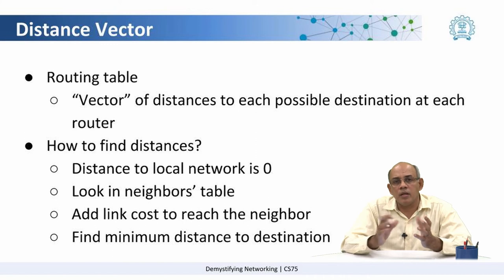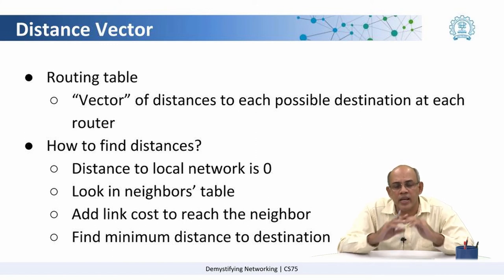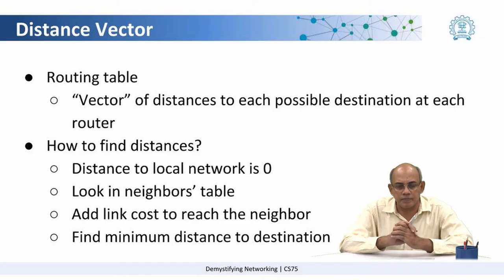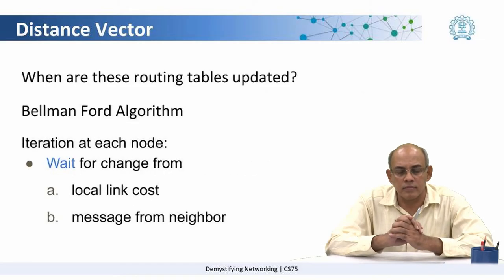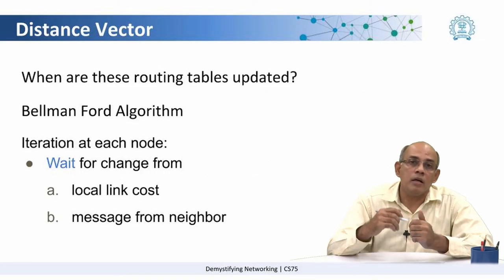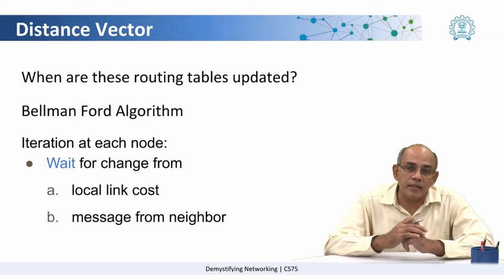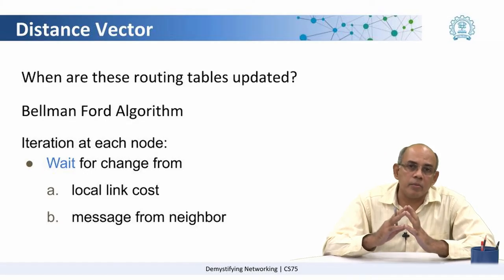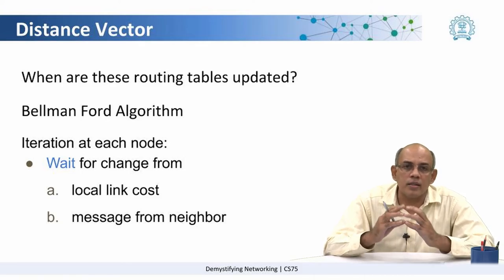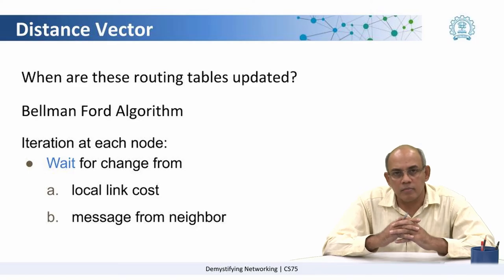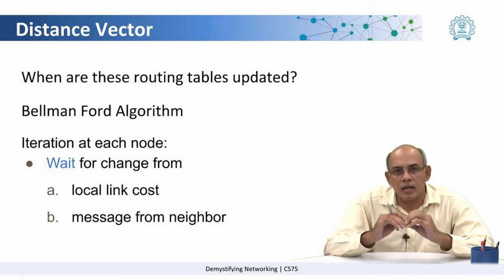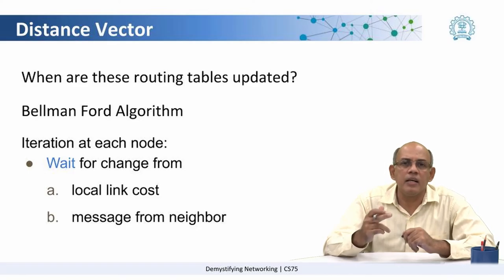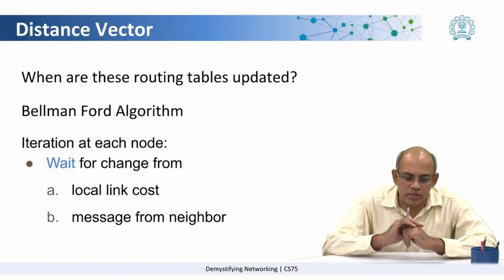Using this table, the routers find the minimum distances to various destinations in the network. When are these routing tables updated? In order to update the routing table, the algorithm that is used is called the Bellman-Ford algorithm. It works iteratively and has three steps.